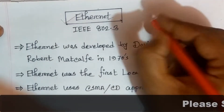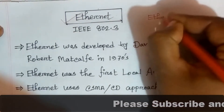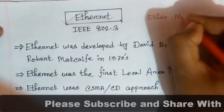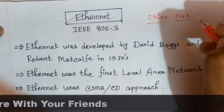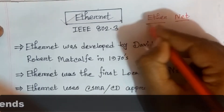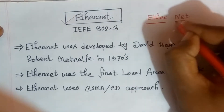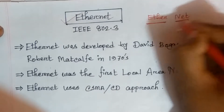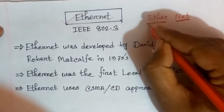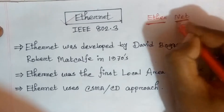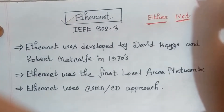If we break down the word 'Ethernet', it is made of two parts: one part is 'Ether' and the other part is 'net'. Together they form the word 'Ethernet'.